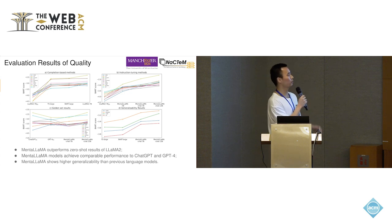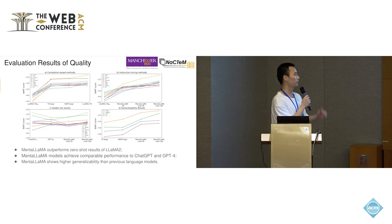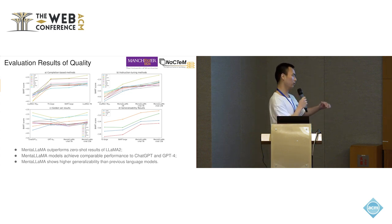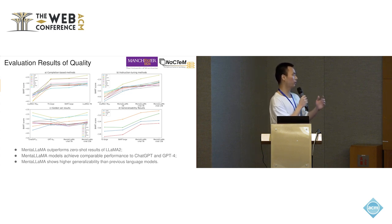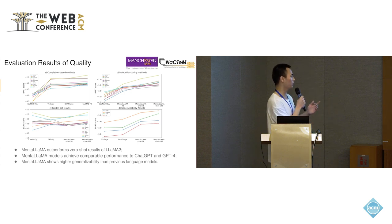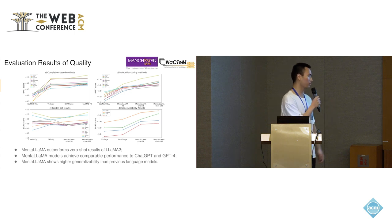Finally, we also evaluated the generalizability of MentalLlama models. Specifically, we excluded four subsets from the training set — CAMS, D-Reddit, TSET, and IRF — where each represents a novel mental health analysis task. According to the results, MentalLlama models significantly improve the BARTScore results over previous smaller language models such as T5 and BART, proving high generalizability compared to these smaller language models.